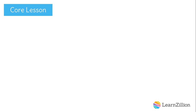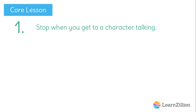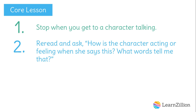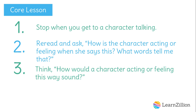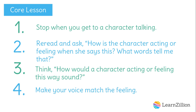Today we're going to be working on matching our reading voice to the voices of the rooster and the mouse. We're going to use these four steps to guide us. First, stop when you get to a character talking. Second, reread and ask, how is the character acting or feeling when she says this? What words tell me that? Third, think, how would a character acting or feeling this way sound? And fourth, make your voice match the feeling.